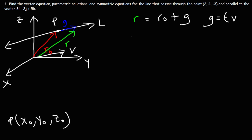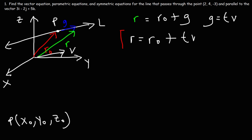Thus we have the vector equation of a line: r equals r0 plus t times v. This is the formula we're going to use in order to write the vector equation.